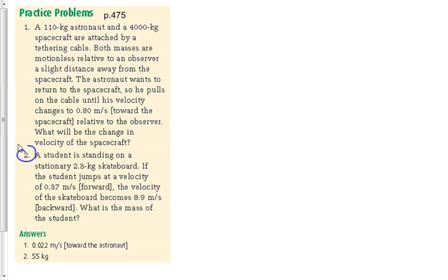Number two says: a student standing on a stationary 2.3-kilogram skateboard — the student jumps at a velocity of 0.37, the velocity of the skateboard is 8.9. What's the mass of the student? We saw a question kind of like this yesterday, but it wasn't an explosion-type question — it was a collision-type question.